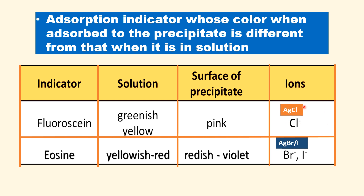For chloride ions, fluorescein is used as the adsorption indicator. For bromide and iodide ions, eosin is used as the adsorption indicator. Before the end point, fluorescein is green-yellow in solution — a fluorescent solution. Once it gets adsorbed at the end point, it changes to a pink color precipitate. Similarly, eosin — before the end point, the indicator eosin is yellow-red. After adsorption on the precipitate, the color changes to red-violet.